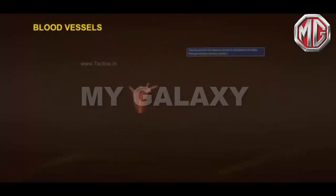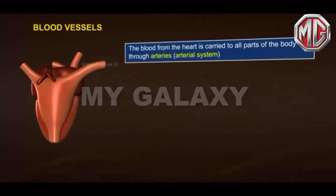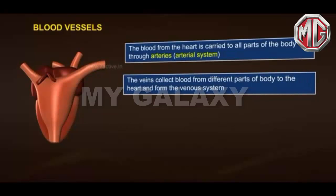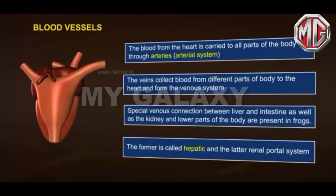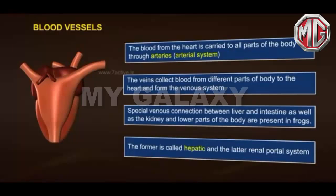Blood Vessels: The blood from the heart is carried to all parts of the body through arteries, forming the arterial system. The veins collect blood from different parts of the body to the heart, forming the venous system. Special venous connections between the liver and intestine, as well as the kidney and lower parts of the body, are present in frogs. The former is called the hepatic portal system and the latter the renal portal system.